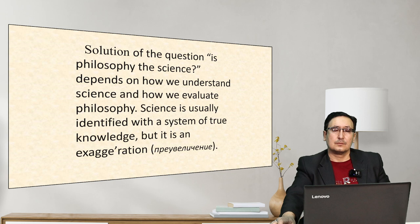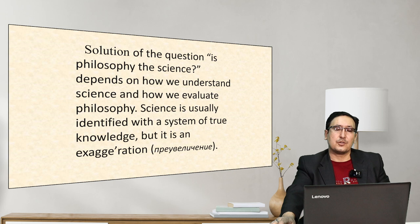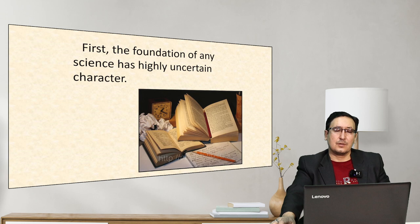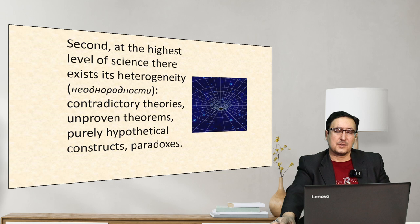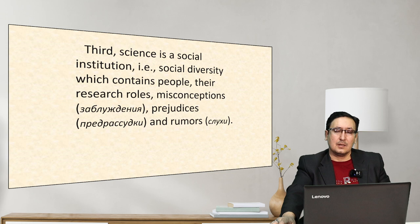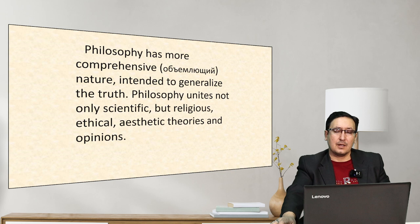The question of whether philosophy is a science depends on how we understand science and evaluate philosophy. Science is usually identified as a system of true knowledge, but that is an exaggeration. First, the foundations of any science have a highly uncertain character. Second, at the highest level of science there exist contradictory theories, unproven theorems, and paradoxes. Third, science is a social institution containing people, misconceptions, and prejudices.